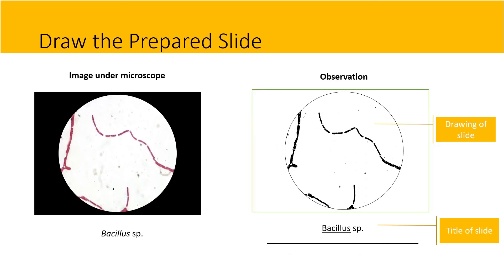On your screen now are the examples of the prepared slides that are drawn after the observation is made. So at your left-hand side is the image under the microscope, and at your right-hand side is the image drawn according to the view under the microscope.